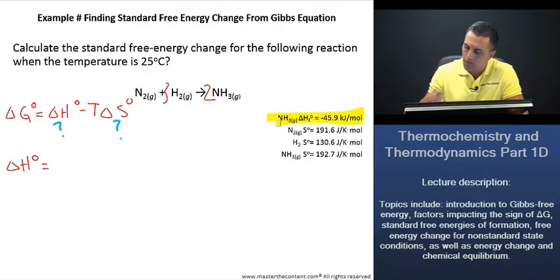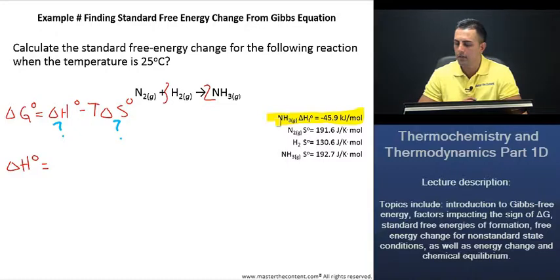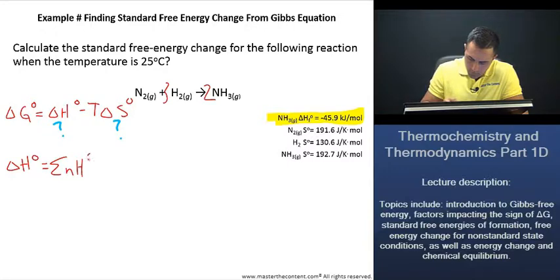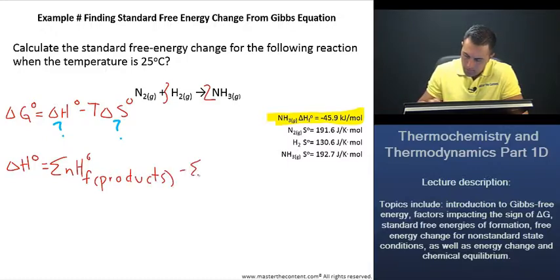And here we're given the one for ammonia at negative 45.9 kilojoules per mole. Wonderful. And this was an equation that we introduced a few slides back. Let's just go ahead and write that down now. And that was just for the products, the enthalpy change for the products minus the standard enthalpies of formation here for our reactants.